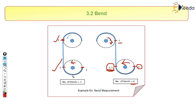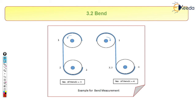What is the relation between the number of bends and the life of the rope? As the number of bends increases, the life of the rope decreases. Simply: fewer bends means more rope life, and more bends means less rope life.